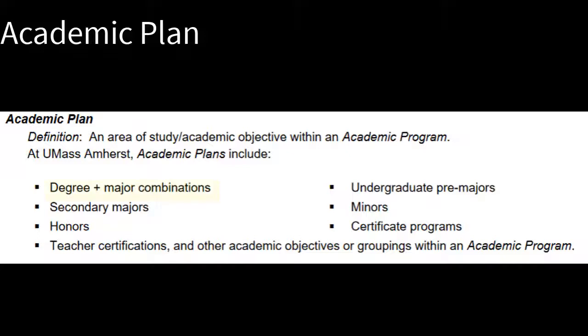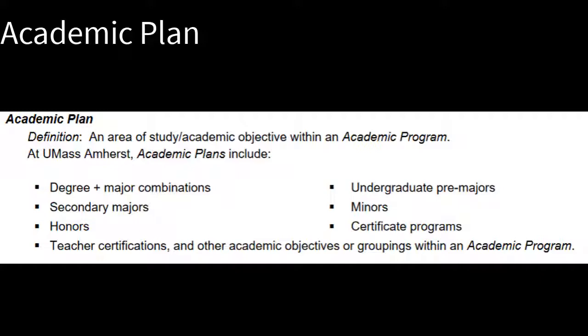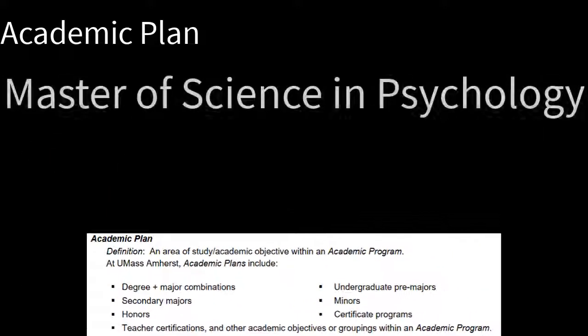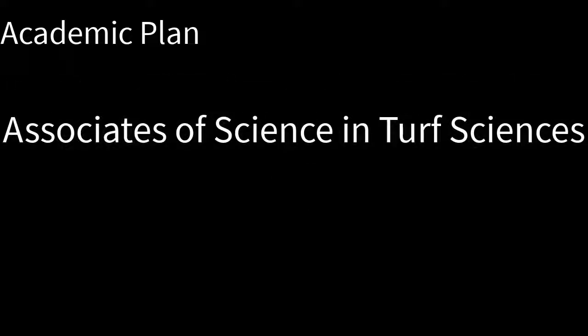Plan. A plan is what many refer to as a major, or a concentration of study — for example, biology. It is a broader term than major, however, and could be a secondary major, a certificate, a pre-major program, or indicate honors. When abbreviated, it is common to see the degree and major together. For example, a Master's of Science degree in Psychology is abbreviated MSPSYCH. An Associate's of Science degree in Turf Science is ASTURF.